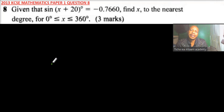Question number 8. Given that sine x plus 20 degrees is equals to minus 0.7660, find x to the nearest degree for 0 less than or equals to x less than or equals to 360.